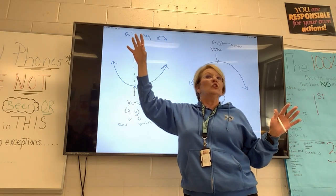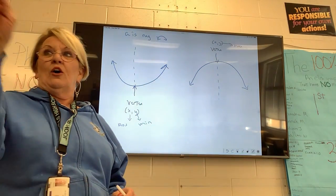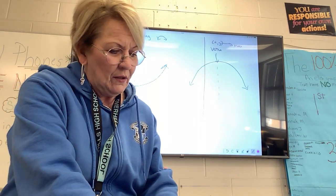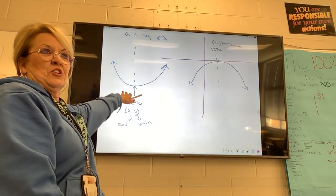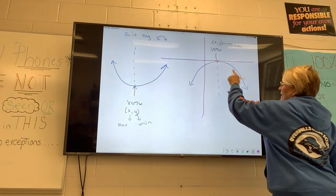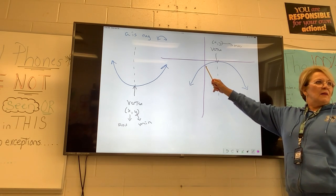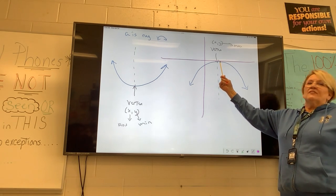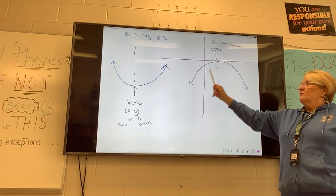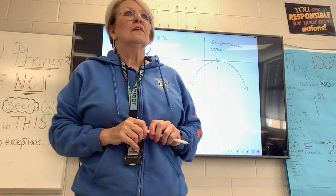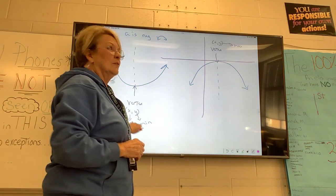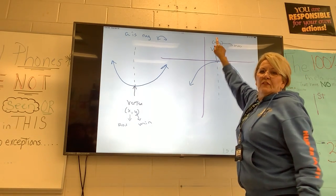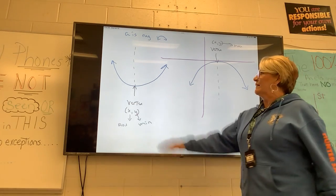A parabola not only has a vertex — and they all have a vertex — but it also has a Y-intercept. But they don't all have an X-intercept. Does this parabola go high enough to hit the X-axis? It doesn't — this will never have an X-intercept. But it does have a Y-intercept. They all have a Y. They're all the X values or AOS values, and the Y values are your max or your min — in this case the min, in that case the max.